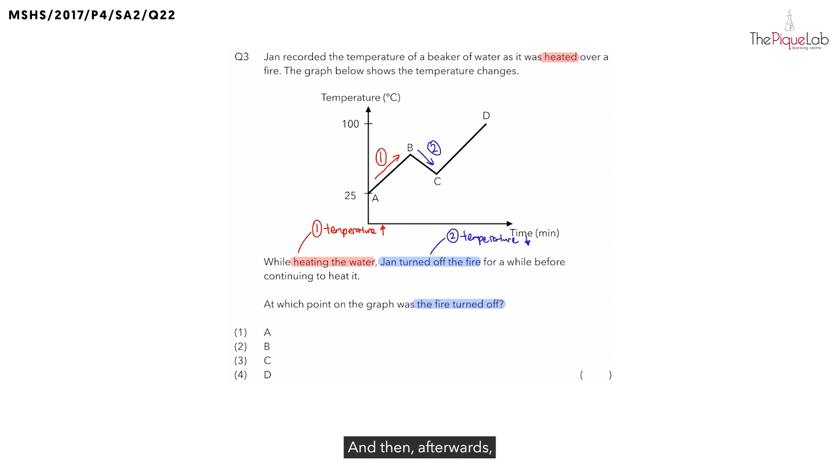And then afterwards, she's going to continue to heat it again. When she continues to heat it, what will happen to the temperature? This time, we know that the temperature is going to increase. Which parts of the graph show you an increase in temperature? It is from C to D.